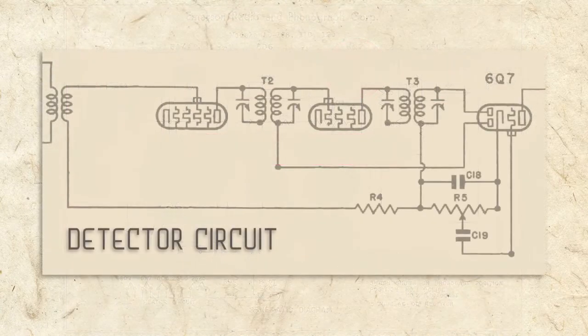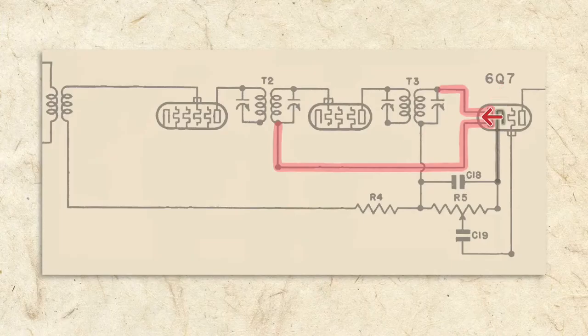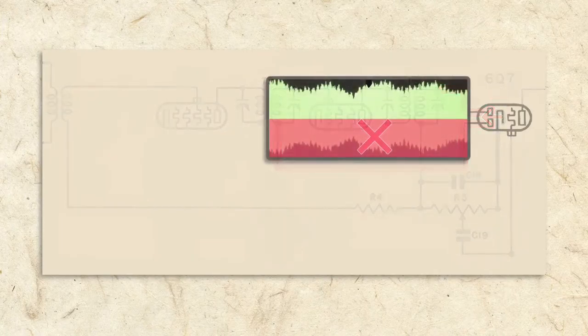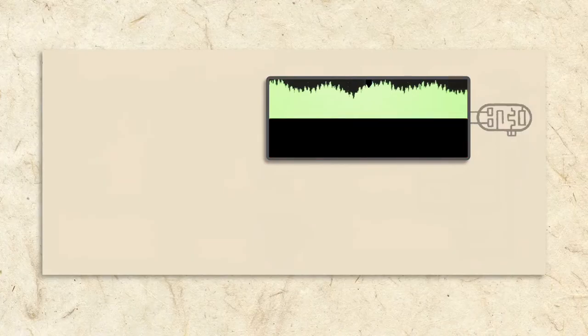Here's how the circuit works. The signals from the IF transformers are connected to the two plates in the detector tube. As current flows to the plates from the cathode, the negative waves of the IF are blocked, and only the positive portions can pass.